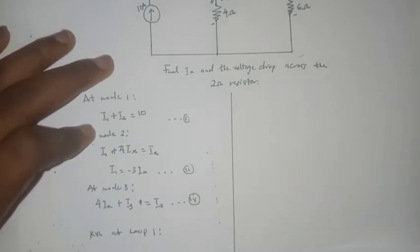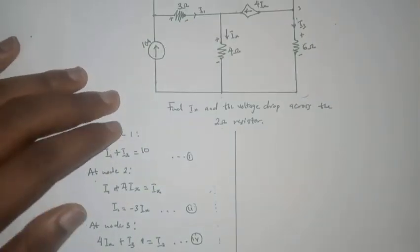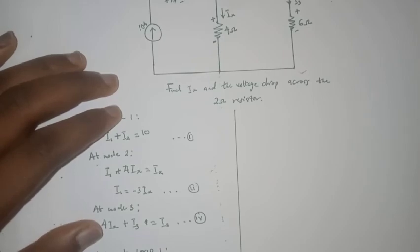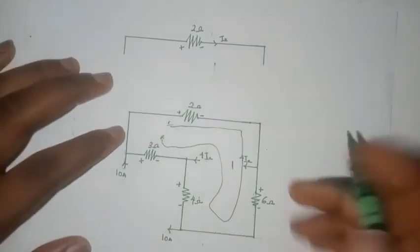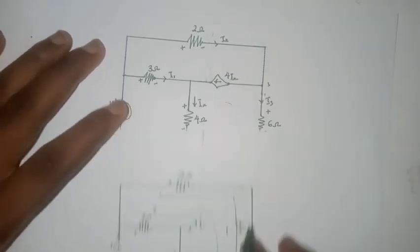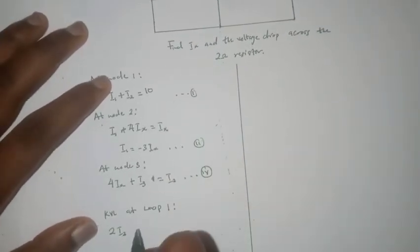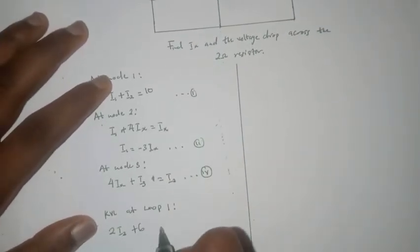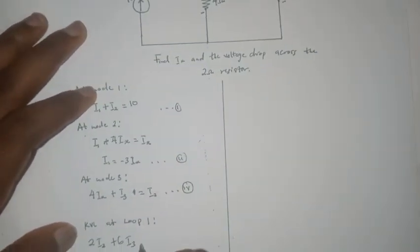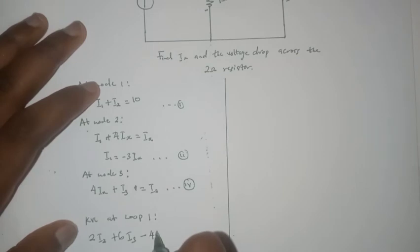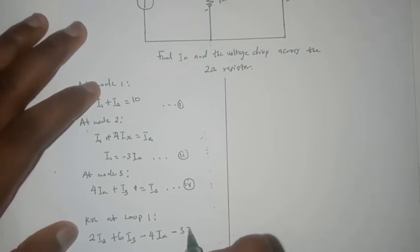So we start from here and we have, let's call this loop 1. So KVL at loop 1, here we have the KVL equation. Then we say that 2i2, then we come down here and that is i3, so we have 6i3 plus 6i3 plus 6i3, then we have minus 4ix, then minus 3i1 equals 0.